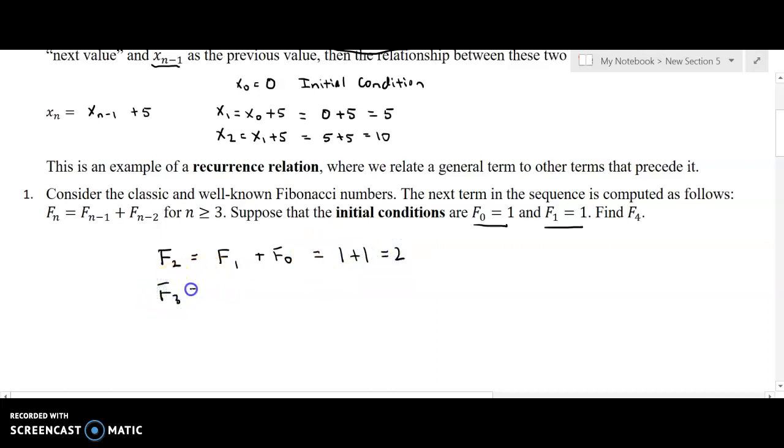To get F3, I have to take F2 and add F1 to it. Well, F2, I just calculated as 2. F1 is given to me as 1, so the next term in the Fibonacci sequence is 3. So we want to stop at F4, and F4 is going to be F3 plus F2. F3 is 3. F2 is 2. And so the fourth, or rather the fifth term in the Fibonacci sequence is 5.